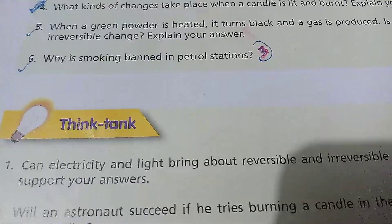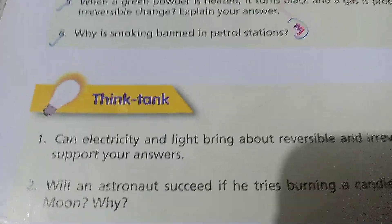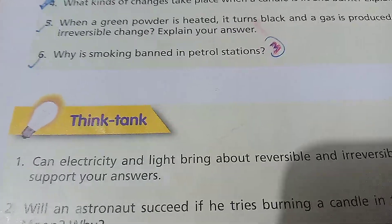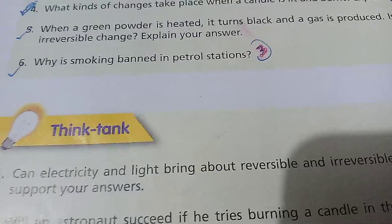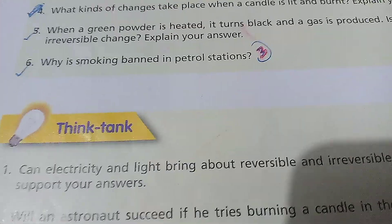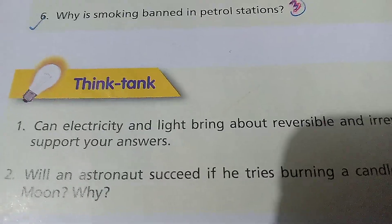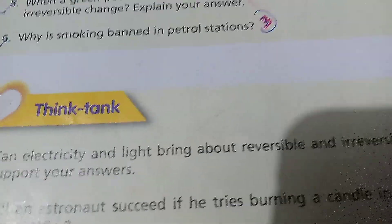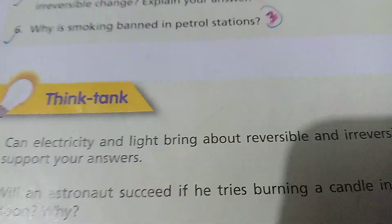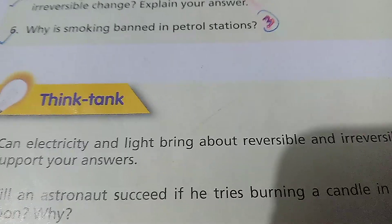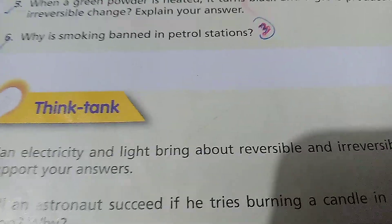The second part of question one involves light. Shining light on white paper is a reversible change — the paper remains as it is when the light is removed. However, the process of photosynthesis is an irreversible change. Photosynthesis is the process by which plants make food using carbon dioxide from the air, water, and sunlight. This process cannot be reversed.